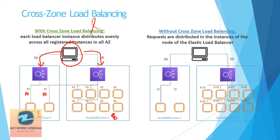Now, what is the difference when you don't have cross-zone load balancing? You can see the difference clearly. In this case, the two instances in AZ1 would each receive 25% of the load, while the eight instances in AZ2 would have very little load. That's something you need to understand from a design perspective.